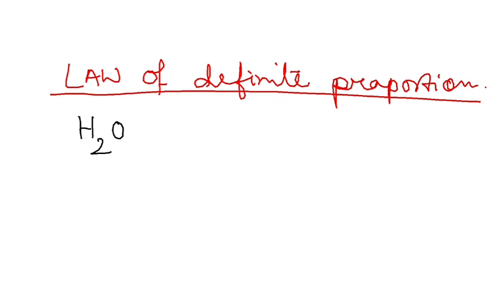The example I discussed is H2O. What is the ratio by number? 2 is to 1. And what is the ratio by mass? 1 is to 8.